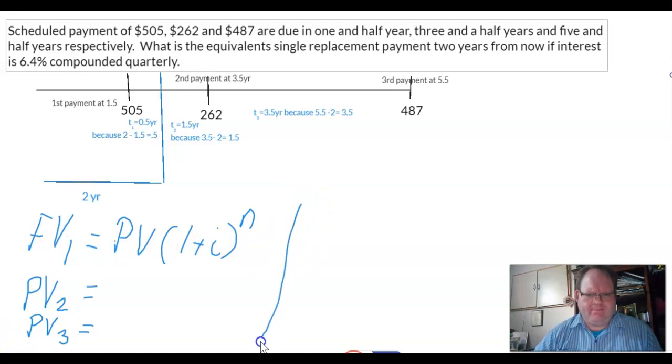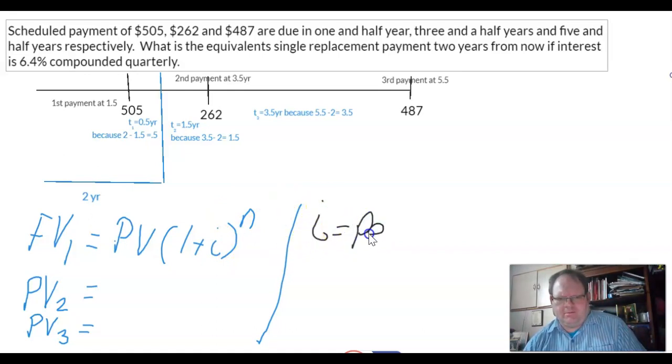i is what we call your periodic interest rate. So if you think of a credit card, some magical credit card that's 12% per year, that's compounded monthly, you only pay 1% per month. Do the interest rate divided by the number of compounds.